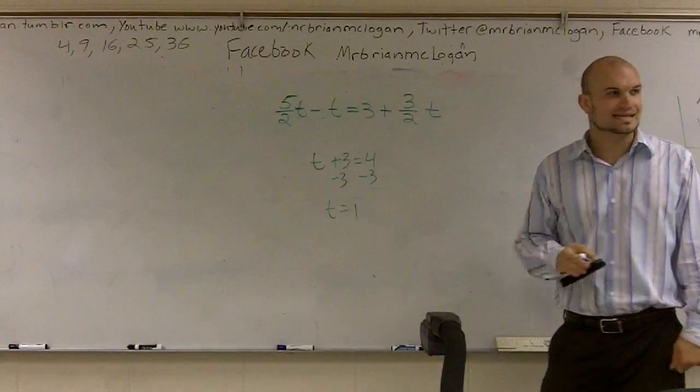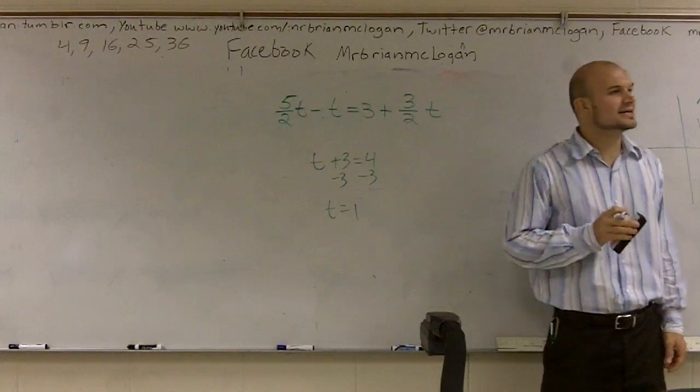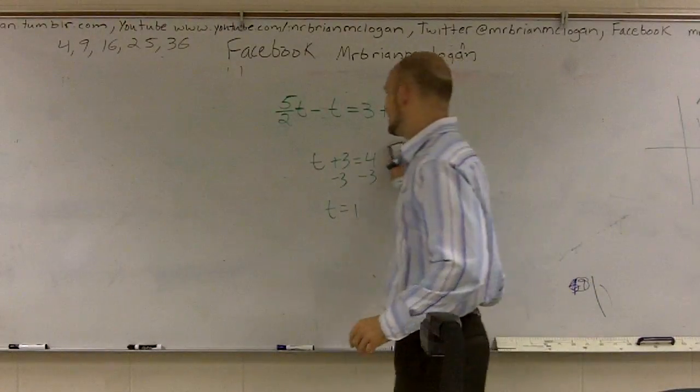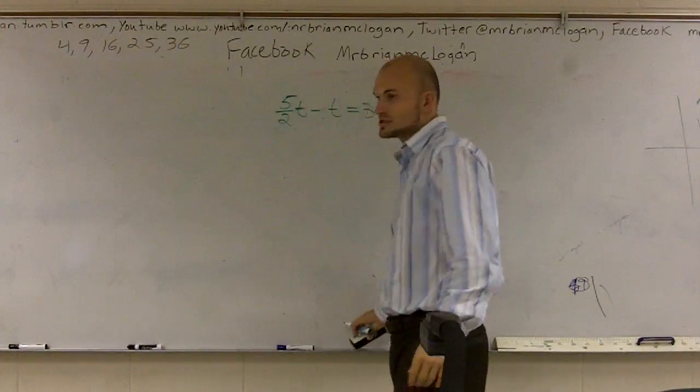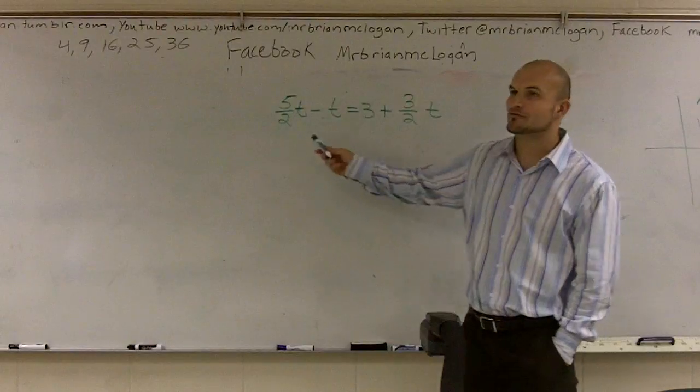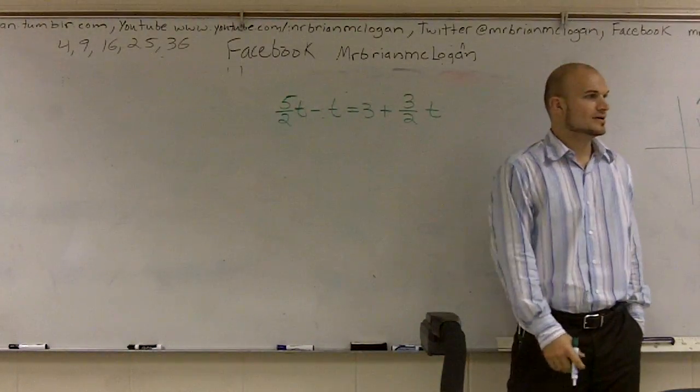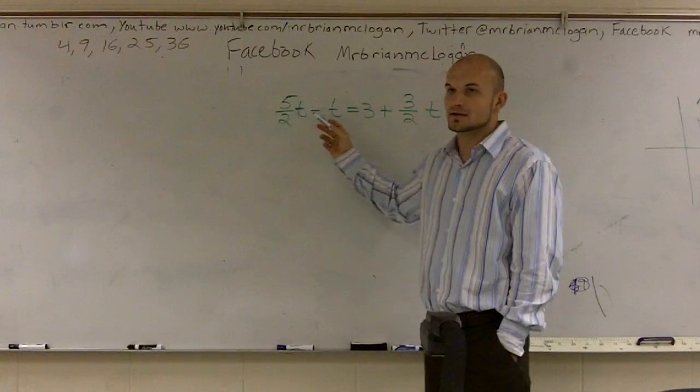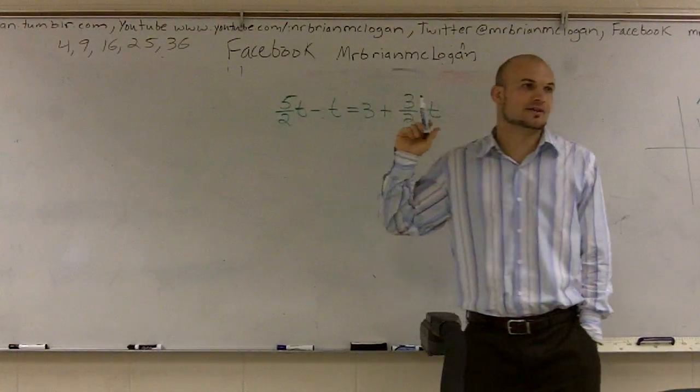Well, now we have three t's. So what we need to do is we need to combine those t's down to 1. Now, to even make combining like numbers harder, we have fractions now induced. So there's nothing wrong with adding 5 halves and then subtracting t from it and figuring that out.